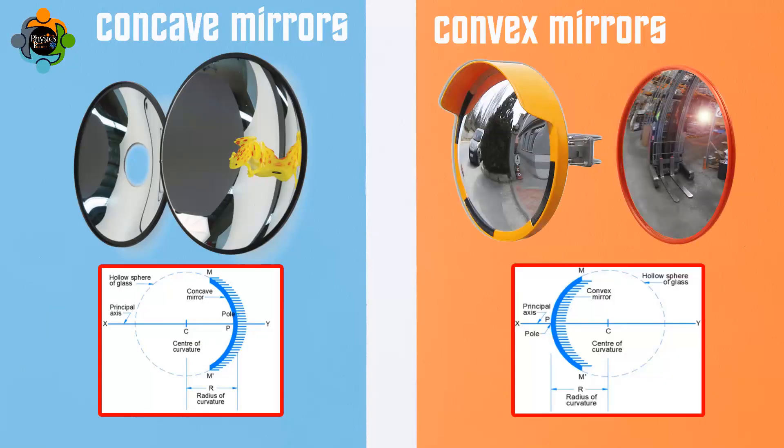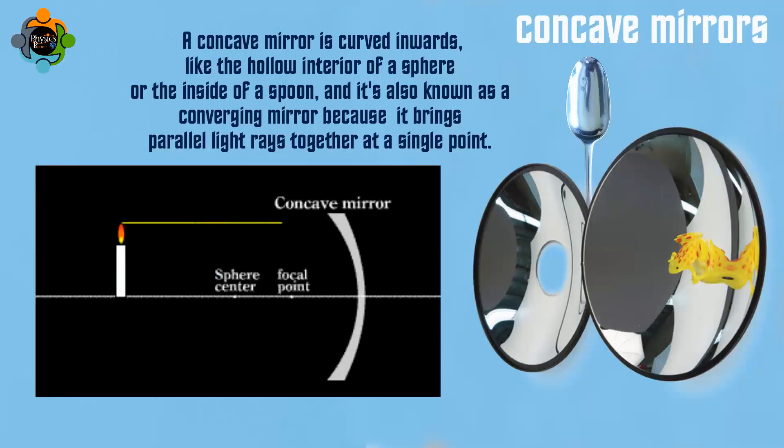Let's explore what makes them unique. A concave mirror is curved inward, like the hollow interior of a sphere or the inside of a spoon. It's also known as a converging mirror because it brings parallel light rays together at a single point.